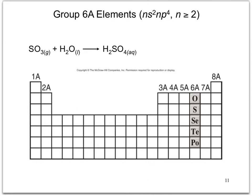Group 6A contains oxygen, sulfur, selenium, tellurium, and polonium. Again, the group 6A oxides form acid anhydrides.